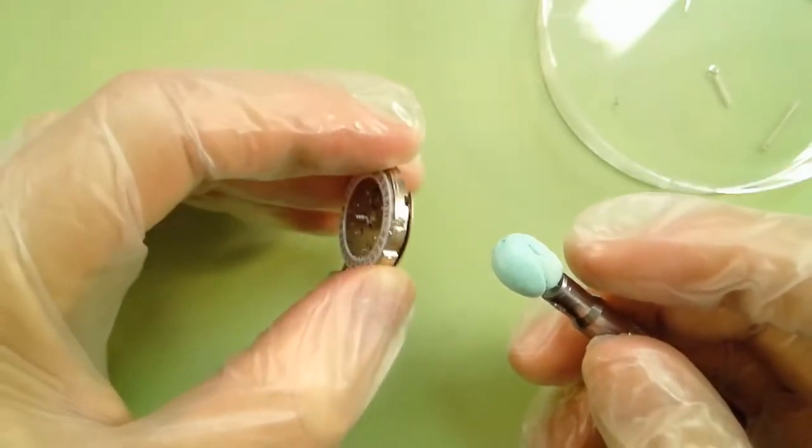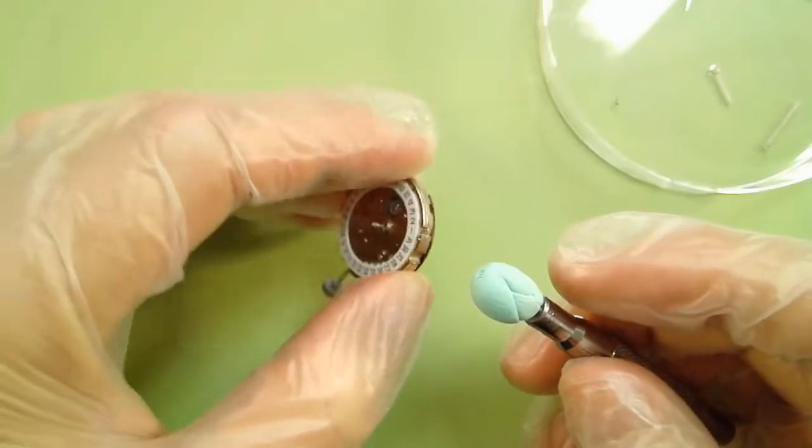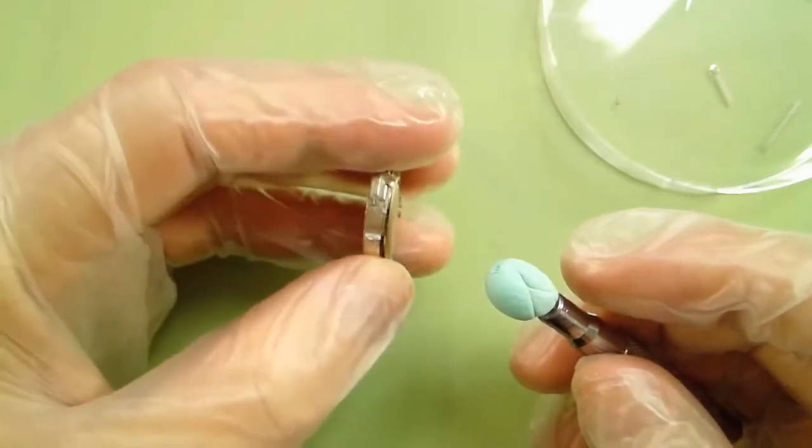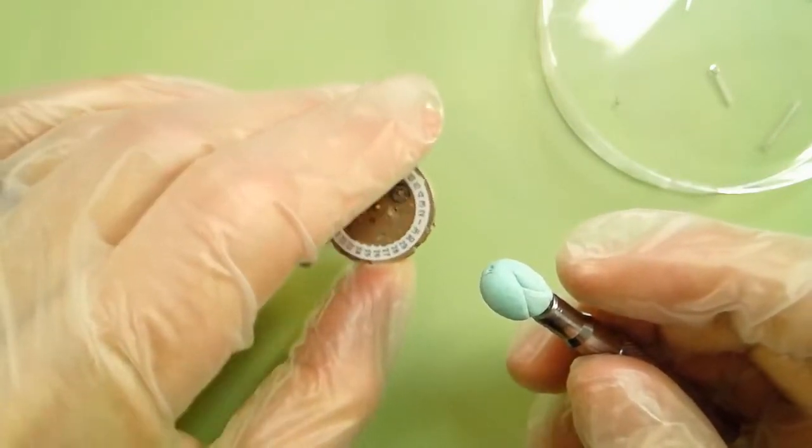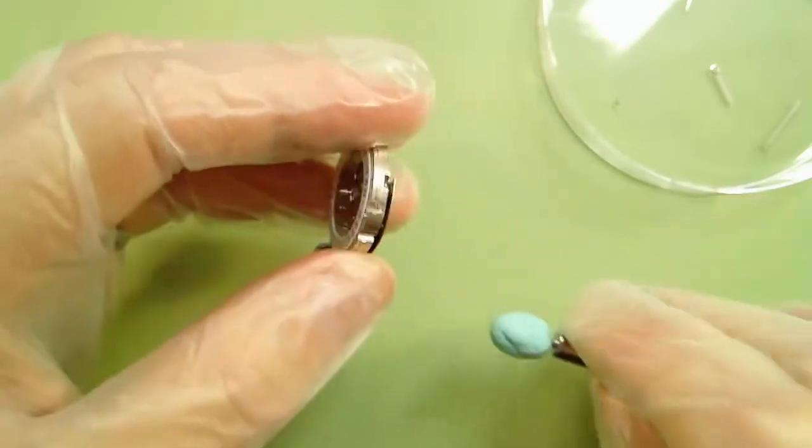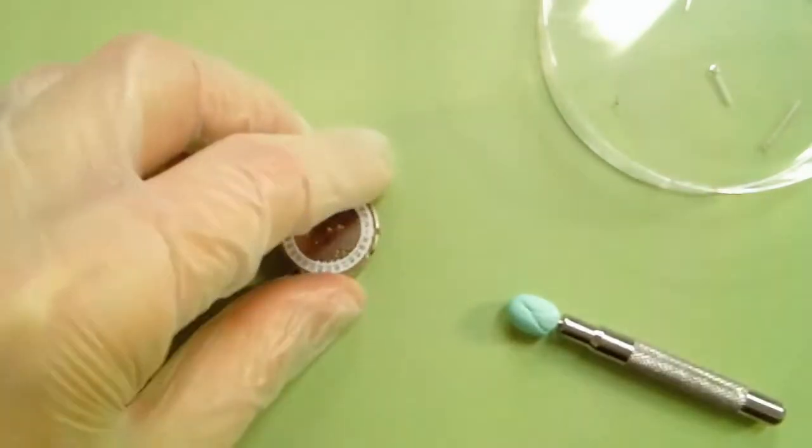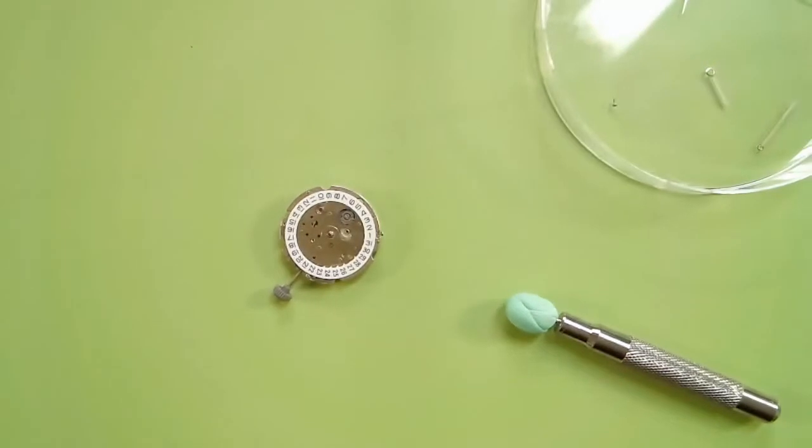So I've got the screw started. You'll go ahead and grab your black-tipped screwdriver in the Esslinger tool kit, and you'll secure it down.